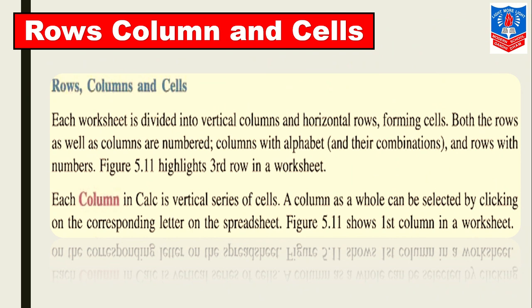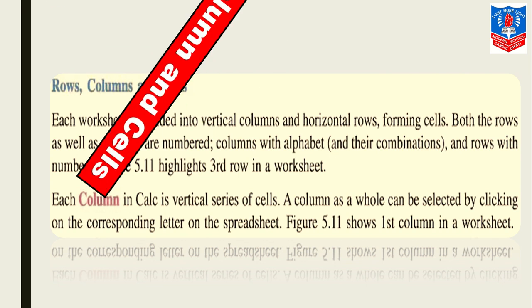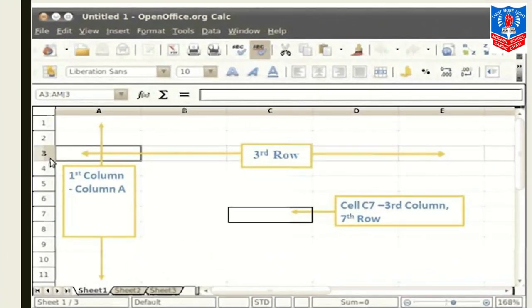Earlier we have seen introduction of Calc. Now we will see rows, columns, and cells. Each worksheet is divided into vertical columns and horizontal rows. Both these columns and rows are creating or forming cells. Both the rows as well as columns are numbered - columns with alphabets and their combinations, and rows with numbers. Here each column in Calc is a vertical series of cells. A column as a whole can be selected by clicking on the corresponding letter on the spreadsheet. Here you can see the columns and rows.